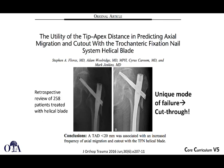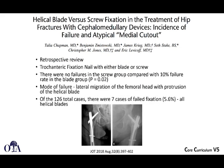Another finding with the helical blade, shown here on the right, is something called a cut-in or cut-through — a failure mode you don't see quite as much with the lag screw. As the fragment shortens, the blade — which is designed to cut its way into bone — can cut through the subchondral bone and into the joint. This can happen if the screw isn't sliding properly.